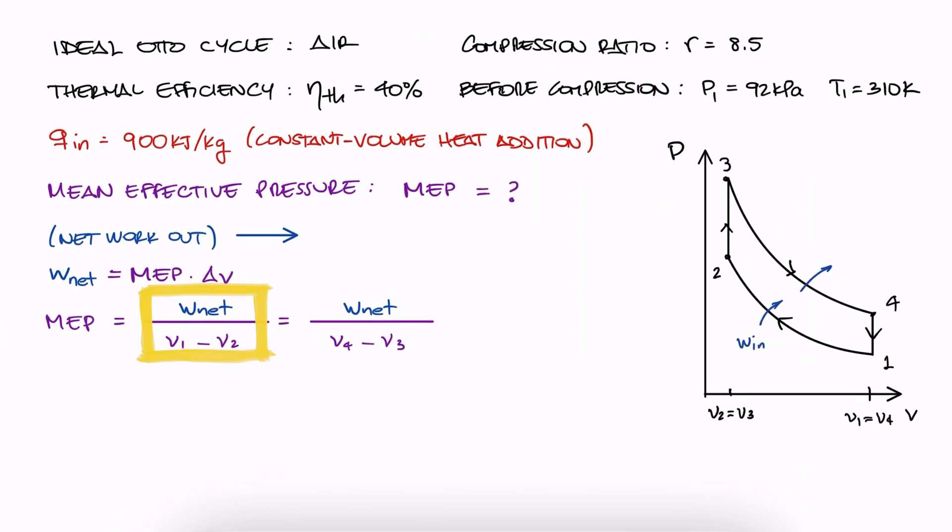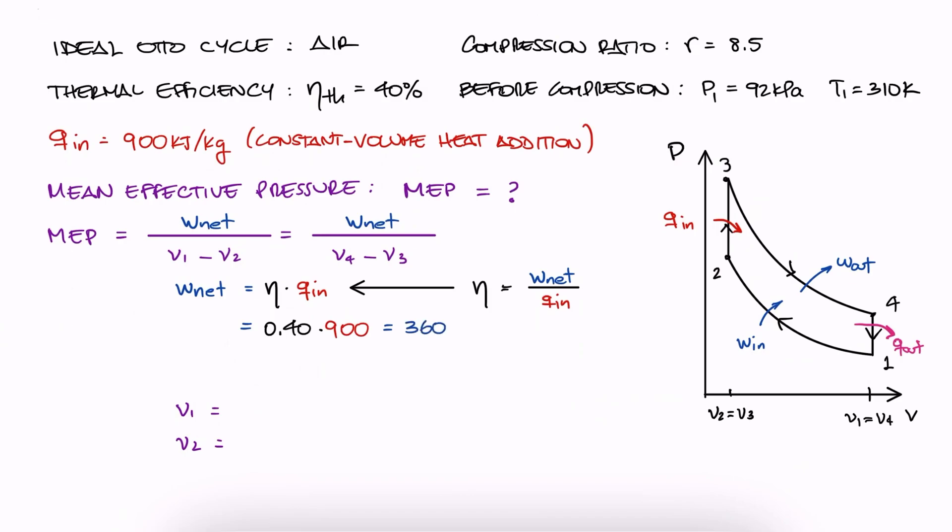Since none of these terms were part of the information of the problem, we'll have to find their values ourselves. From the efficiency expression, W net is eta times Q in, and since the problem gave us both, we have W net.